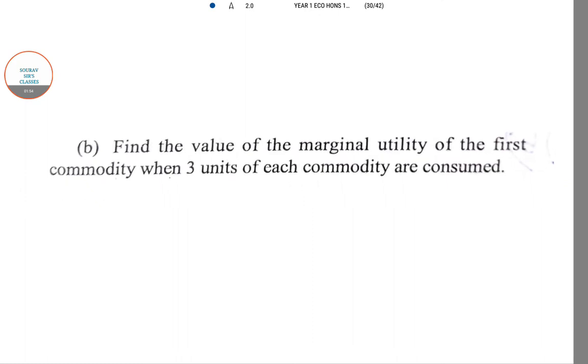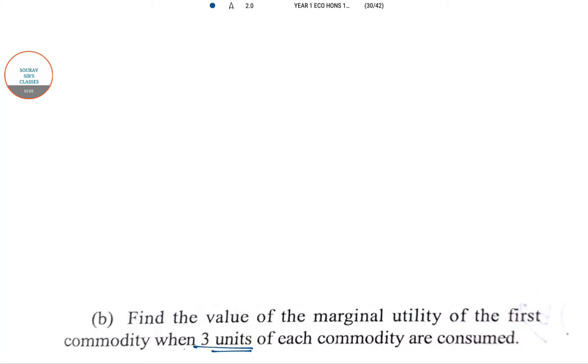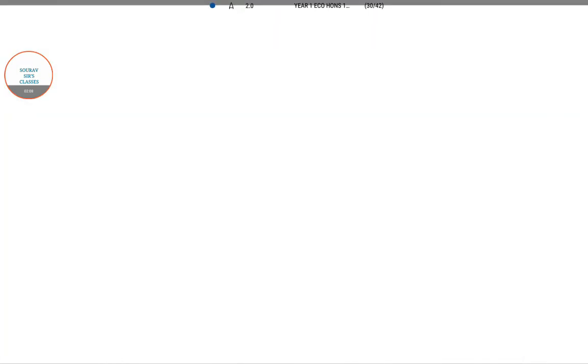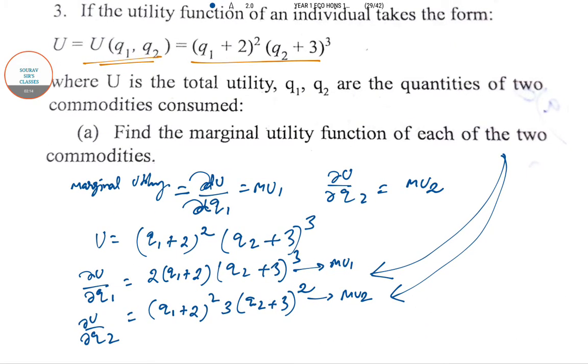Now the second question they have asked here: find the marginal utility of the first commodity when both commodities are consumed at 3 units. So the marginal utility can be recalculated as 2(3 + 2)(3 + 3)³, which is 2 × 5 × 6³. So the answer of the marginal utility value is 2160.